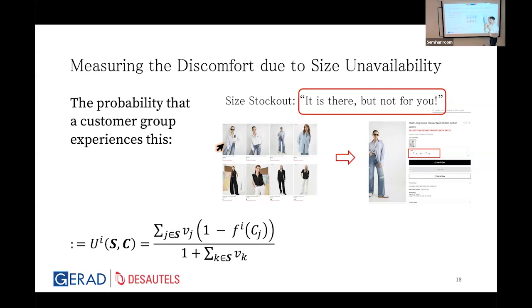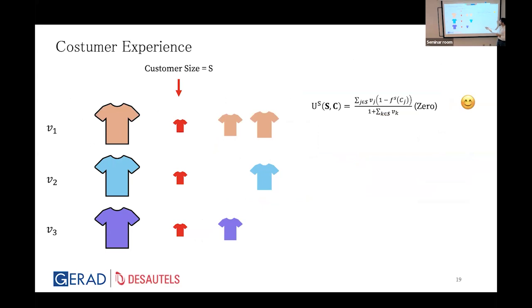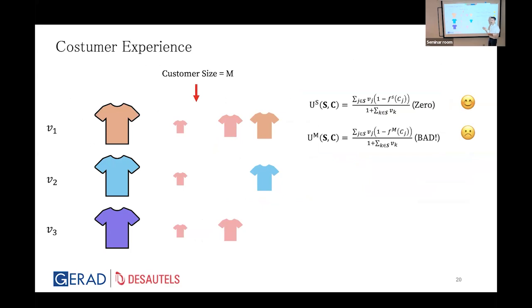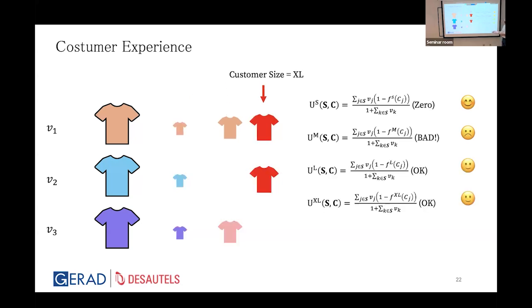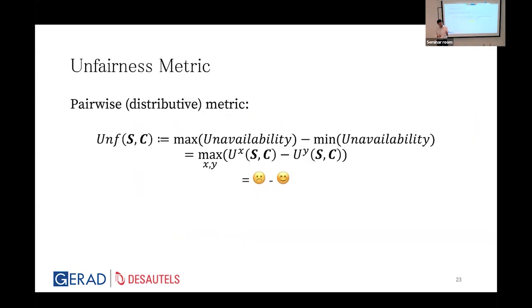For example, given a particular assortment: customers in size group S find everything available in their size — no dissatisfaction. Customers in size group M are in a really bad situation because none of the options are available in their size. For sizes Large and XL it's okay — one option is unavailable but two others are available. The unfairness metric we introduce is pairwise — specifically the gap between the best and worst customer experience due to size unavailability.